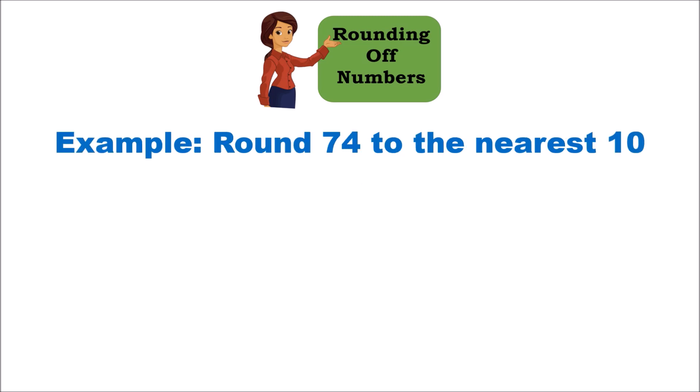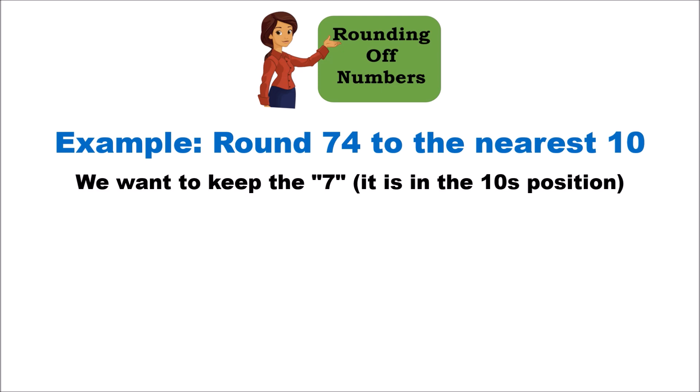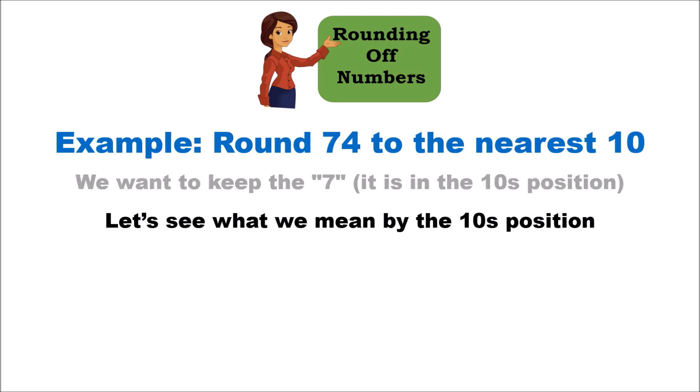Let's look at an example. Suppose you have to round 74 to the nearest ten. The digit we want to keep is seven, because that's in the tens position.